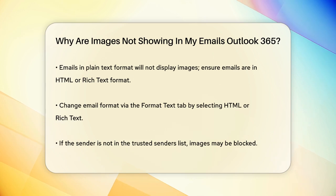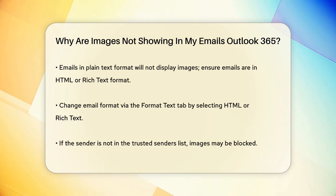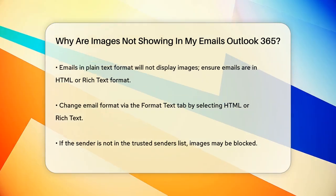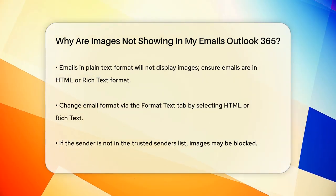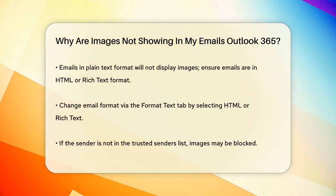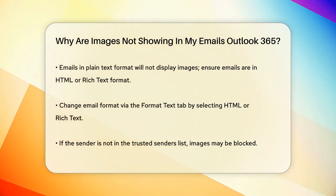If the sender is not in your trusted senders list, Outlook might block their images. You can add the sender to your trusted list by right-clicking on the email and selecting Junk > Never Block Sender.